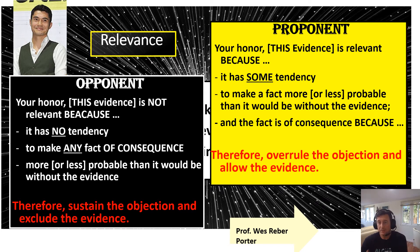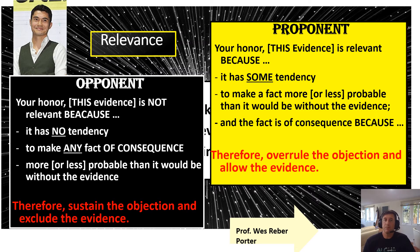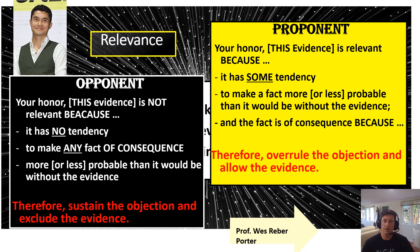At sidebar, the judge turns to my attorney and says: 'The objection is irrelevant — what say you?' And you look at this yellow sheet and go down the Mad Lib. This evidence of wealth and the photographs of the cars and the house is relevant because it has some tendency to make a fact more probable than it would be without this evidence. That fact is that this is oversight and error on his part, which is a key defense in this case and a matter of consequence. We're putting on evidence of wealth to show that these hundreds of thousands of dollars is really just an oversight — like you and me losing five dollars. Therefore, your honor, you should overrule the irrelevance objection, allow this evidence, and admit the exhibits and photographs displaying his wealth.